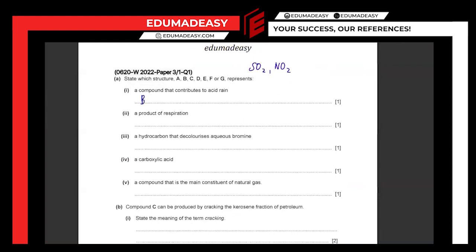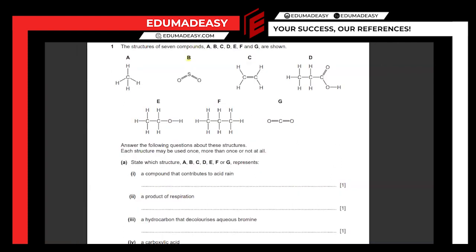Next is a product of respiration. The equation of respiration you should be familiar with: glucose plus oxygen gives carbon dioxide and water. So a product of respiration would either be carbon dioxide or water. It's going to be G, because you can see carbon dioxide.